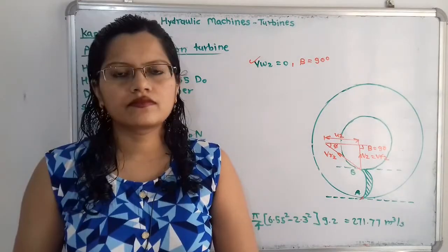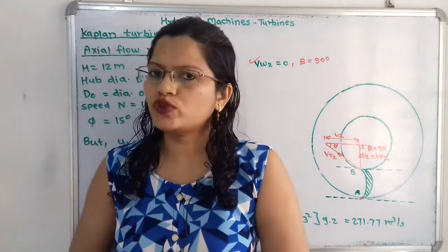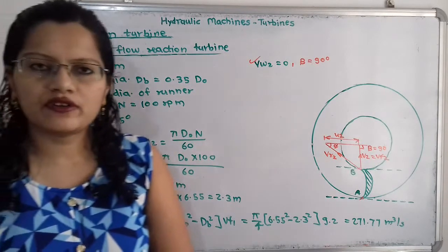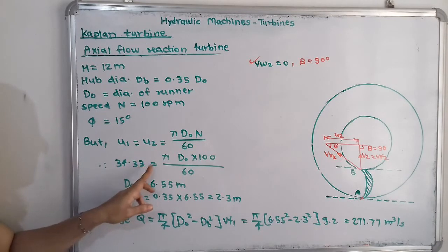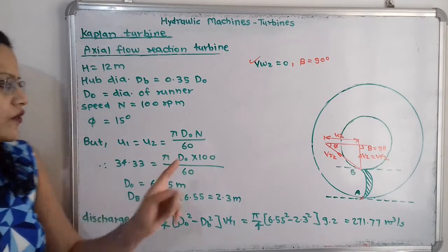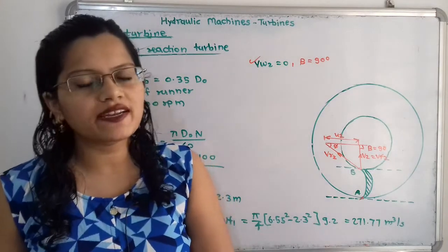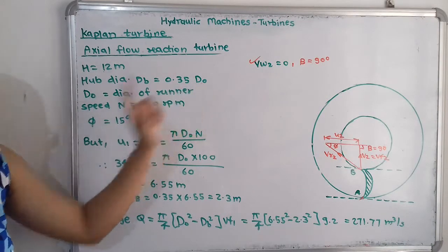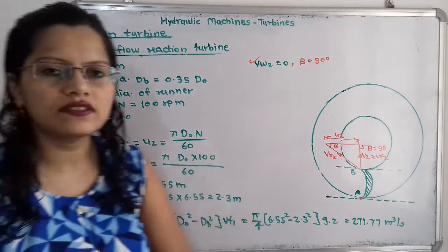For the Kaplan turbine, u1 = u2 = π × Do × N / 60. So 34.33 = π × Do × 100 / 60, giving the diameter of the runner Do = 6.55 m. From this, the hub diameter db = 0.35 × 6.55 = 2.3 m.